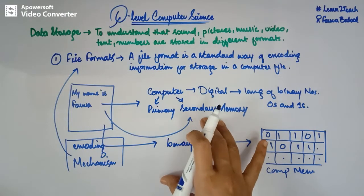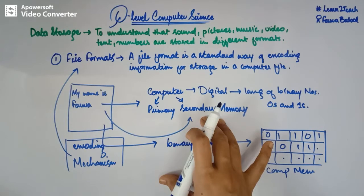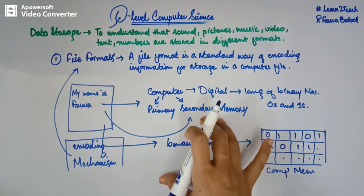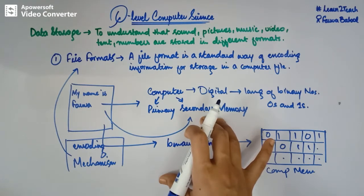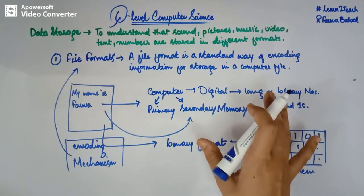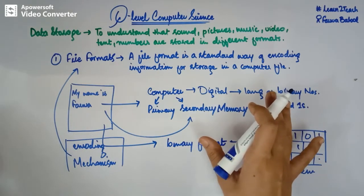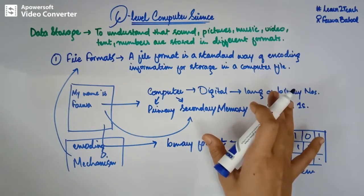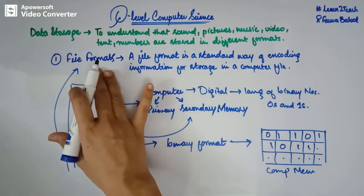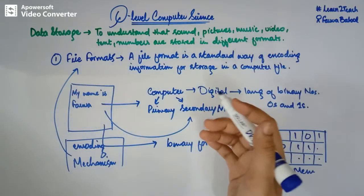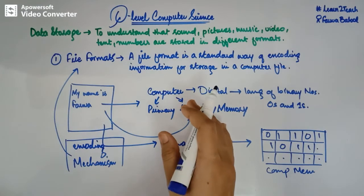Now, further we are going to see what file formats we are going to use for a particular type of file. Like, if I have a text file, then what are the types of file formats we are going to use for it — in order to encode it into binary or into something that can be stored in your memory. So I am going to share a past paper example with you, where we can see how different types of file formats are being used for different types of files.